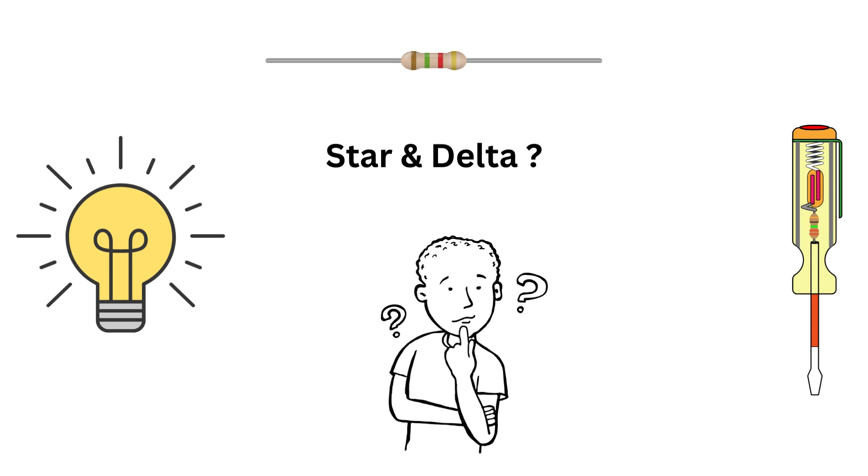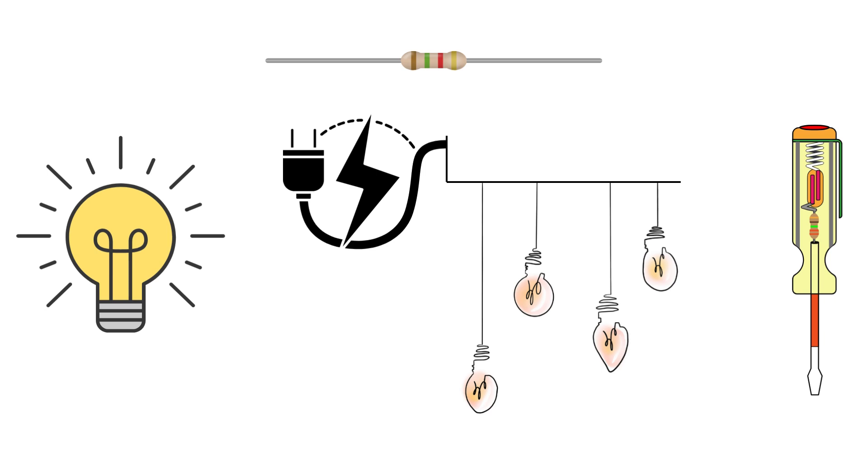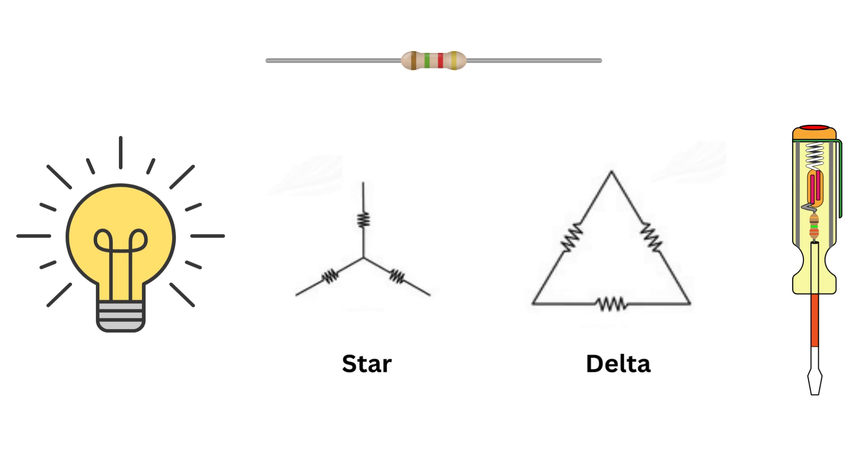Alright, imagine you have a bunch of light bulbs and you want to connect them to a power source. You could connect them in two different ways, star or delta. Let's explore each of these connections.